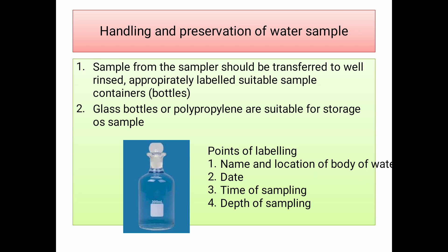How to handle and preserve this water sample? The sample from the sampler should be transferred to a well-rinsed, appropriately labelled, suitable sample container — either a glass bottle or polypropylene bottle, sterilized and transferred. The labelling should include the name and location of the water body, date and time of sampling. Approximately half a liter of water is essential for sampling purposes.